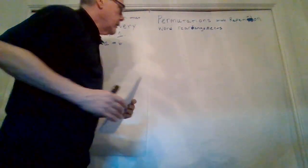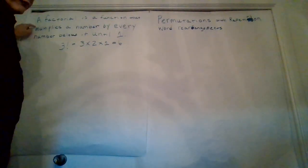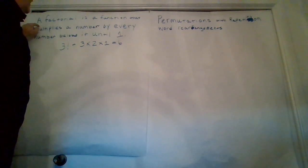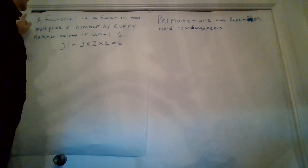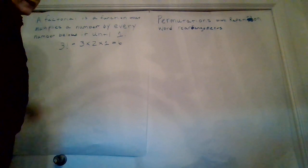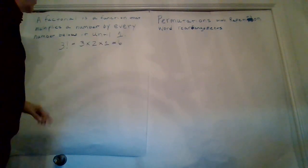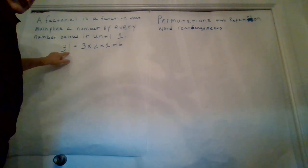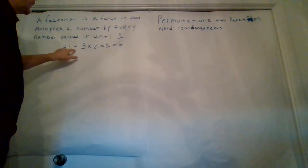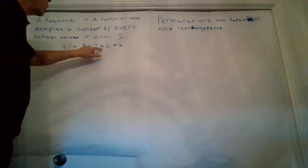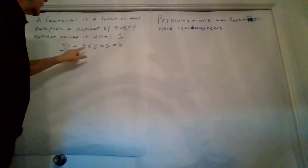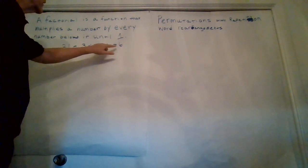As you'll see up here, we're going to use factorials and factorial is a function that multiplies a number by every number below it until you get to 1. For example, 3 factorial is going to be equal to 3 times 2 times 1, which equals 6. So 3 times 2 is 6, times 1 is 6.